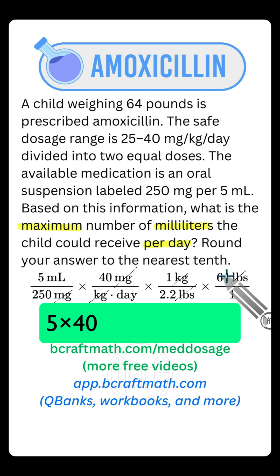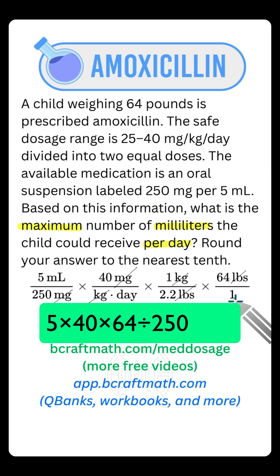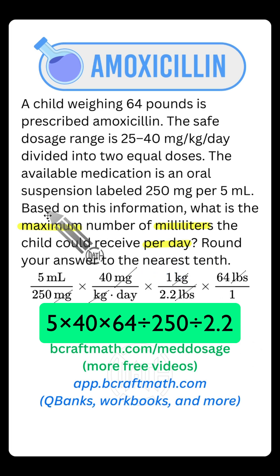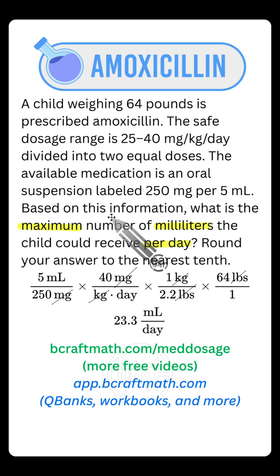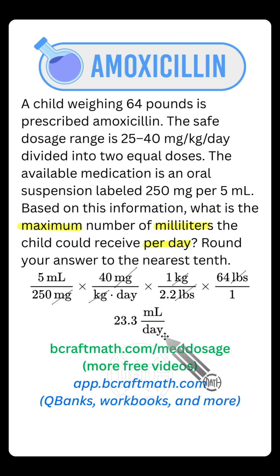Let's multiply all of our top numbers and divide by all of our bottom numbers, rounding to the nearest tenth. The maximum number of milliliters based on the given information is 23.3 milliliters per day.